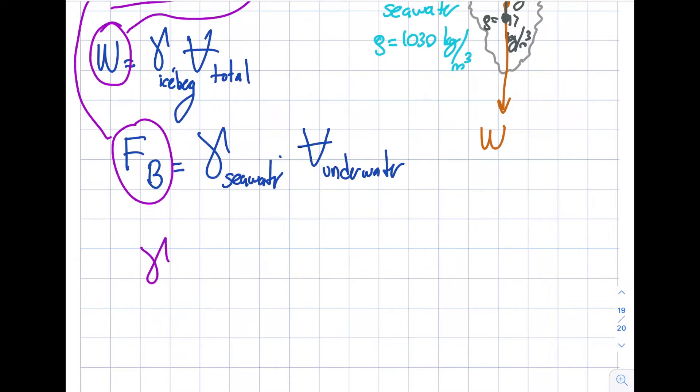So this means that the specific weight of the iceberg times the total volume must be equal to the specific weight of the seawater times the volume under water.